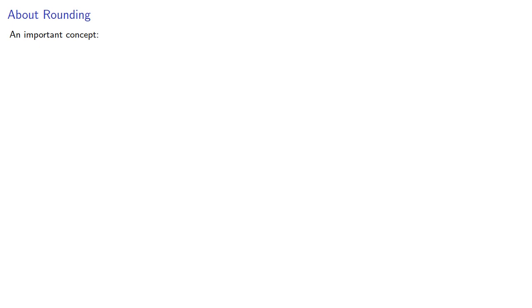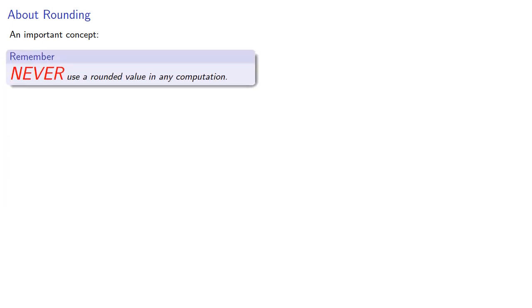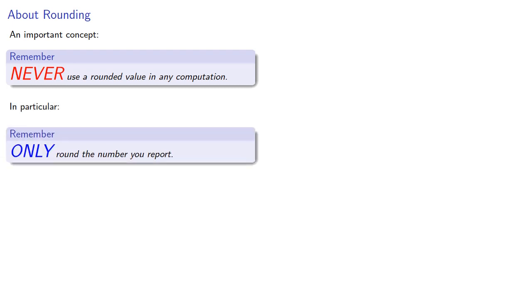At this point, it's important to consider rounding. In physics, engineering, or chemistry, a rounding error might cause minor consequences like a bridge collapsing or people dying. But in finance, a rounding error can cause people to lose money. So here's an important idea: never use a rounded value in any computation. Only round the number you report. In other words, once you've rounded, don't ever use that number again in anything.